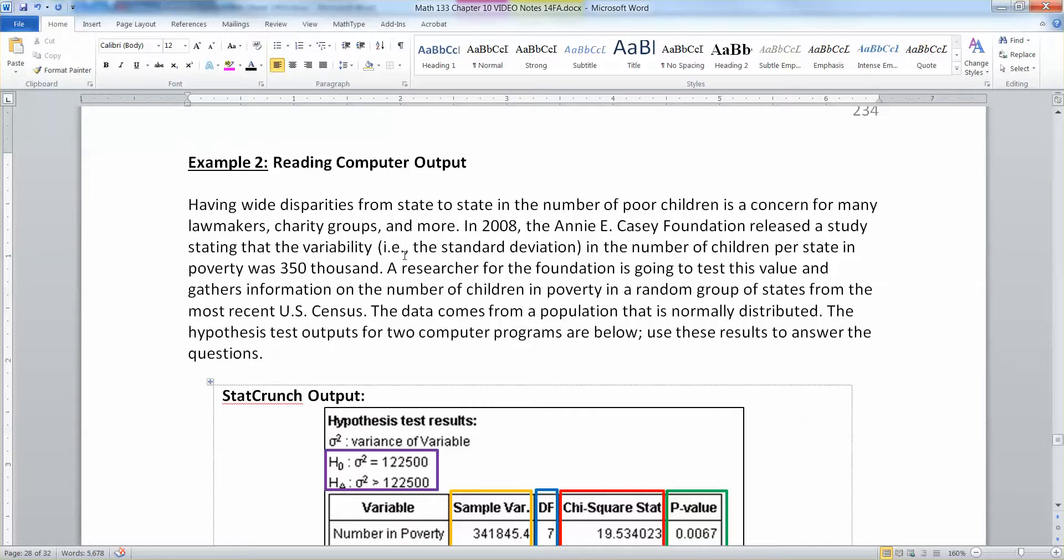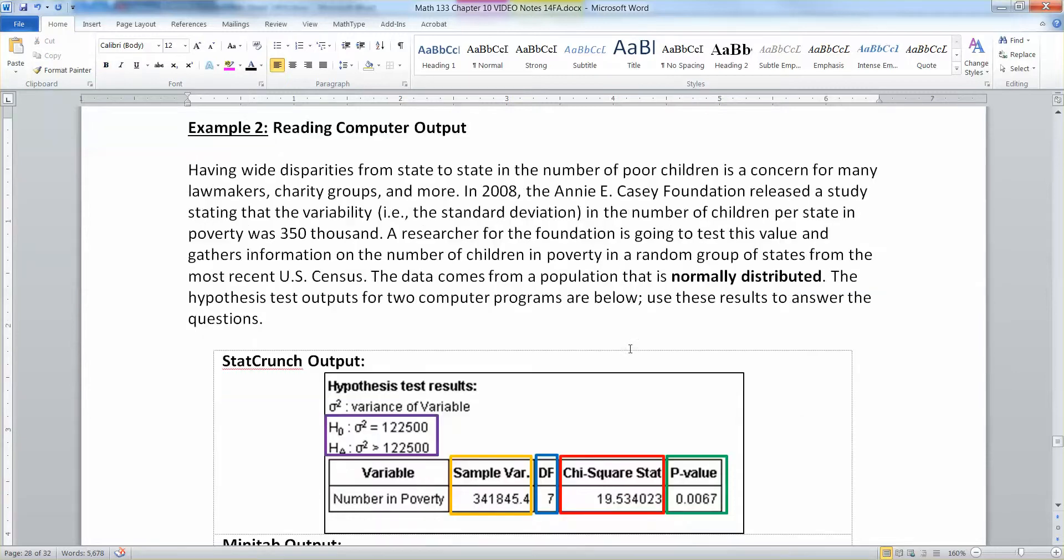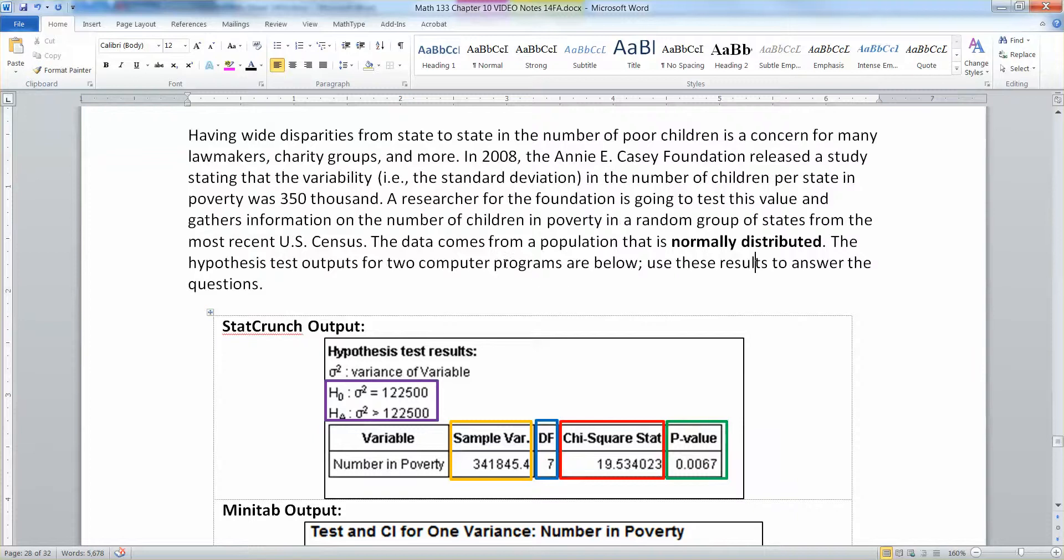A researcher for the foundation is going to test this value and gathers information on the number of children in poverty in a random group of states from the most recent U.S. Census. The data comes from a population that is normally distributed. Well, thank goodness for that, because if we didn't have normally distributed, we'd be in trouble. The hypothesis test outputs for two computer programs are below. Use these results to answer the questions.